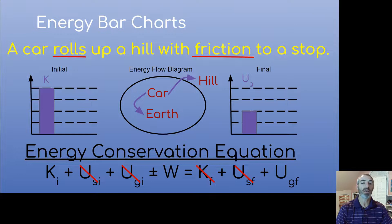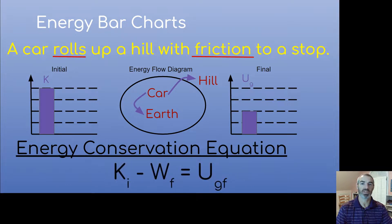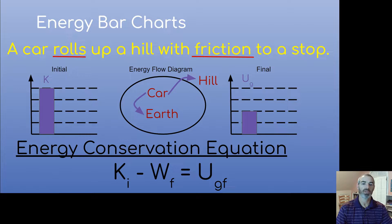We do have work — work done by friction in this situation. Work done by friction has an arrow going out, so that's going to be minus W. That's why we have plus or minus: it depends on the arrow flow, whether it goes from outside in or inside out. I put a subscript F on work for work done by friction. So that's our third equation.